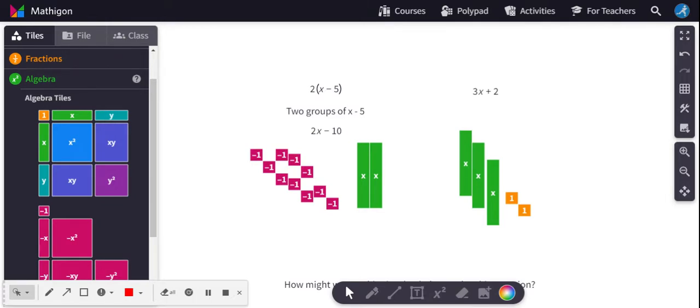We did an example in class where we were representing two groups of x minus five and a group of 3x plus two. And we did that by modeling with algebra tiles. And that's what you can see below. And when you take two groups of x minus five, what that does is it yields these two x's, and then 10 unit tiles.